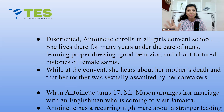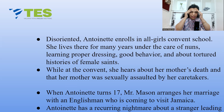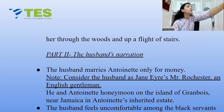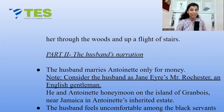When Antoinette turns 17, her stepfather Mr. Mason arranges her marriage with an Englishman coming to visit Jamaica — someone who will not understand Jamaican culture. Around this time, Antoinette is having recurring nightmares: visions of a stranger leading her through woods and up a flight of stairs. She does not know what this staircase signifies. This concludes Part One of Wide Sargasso Sea.